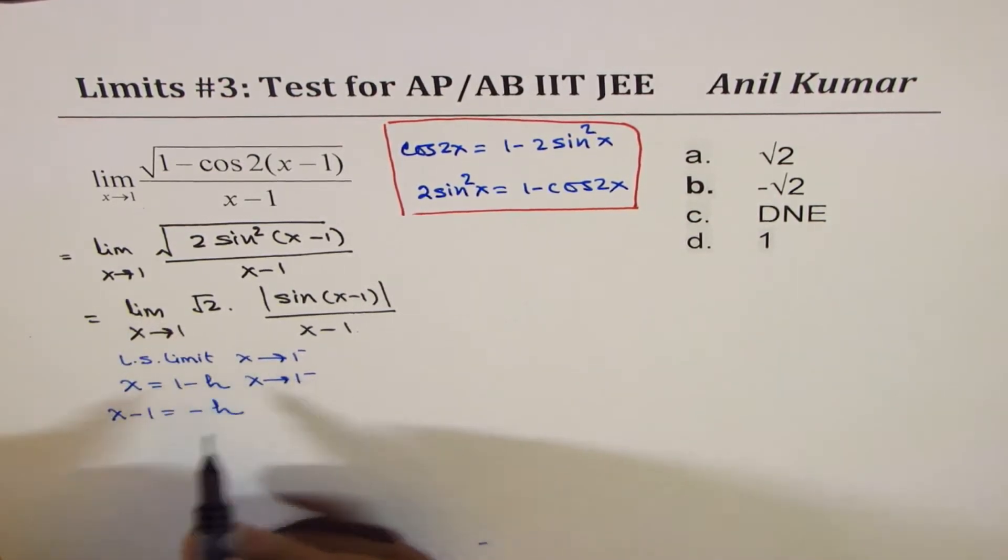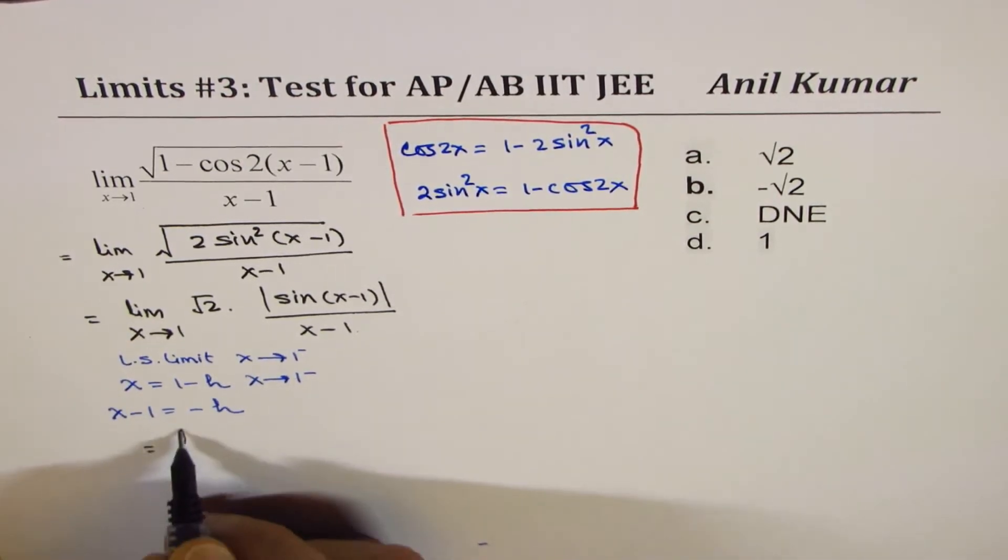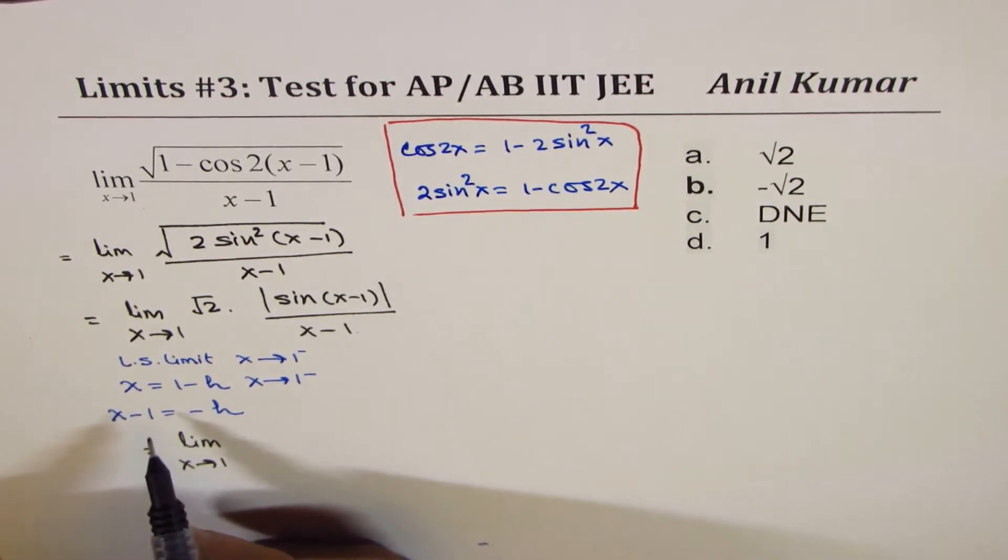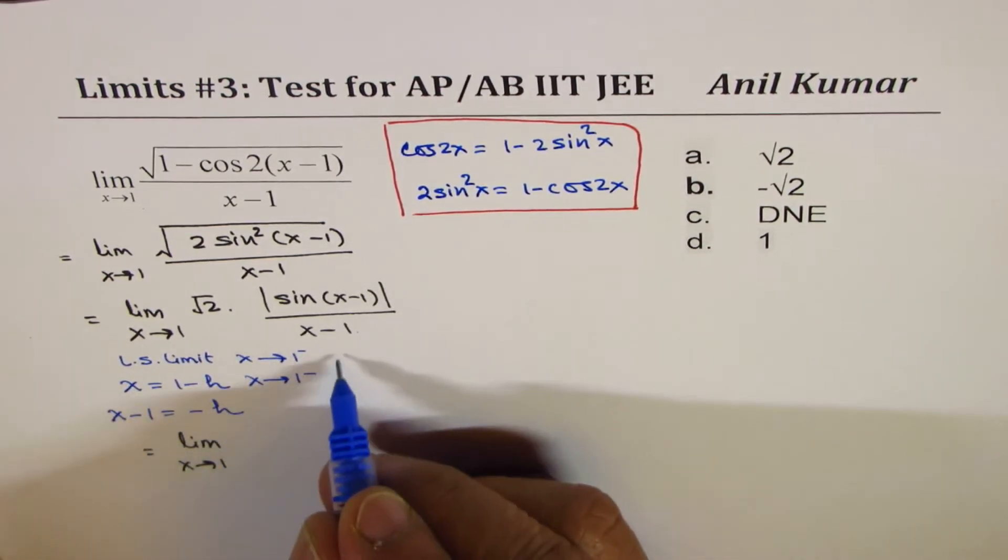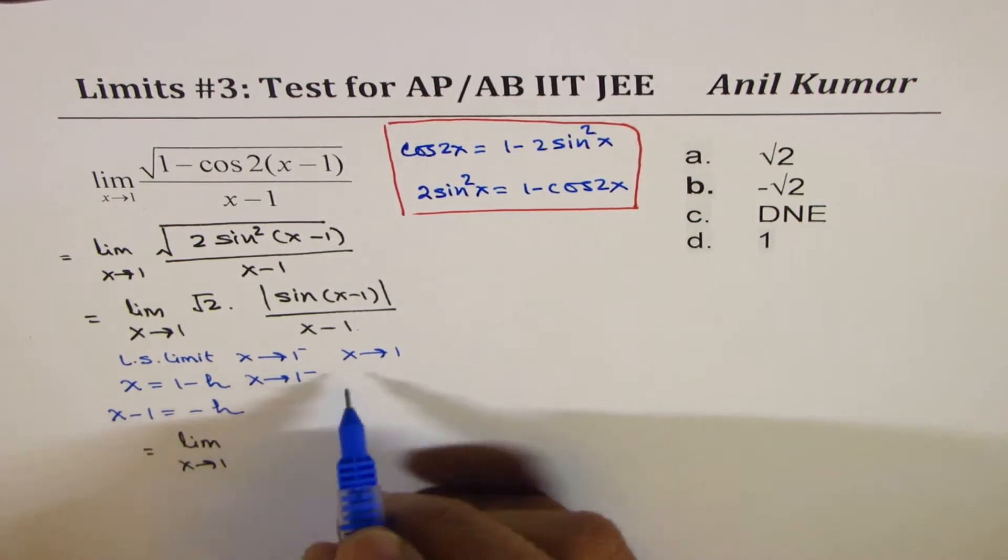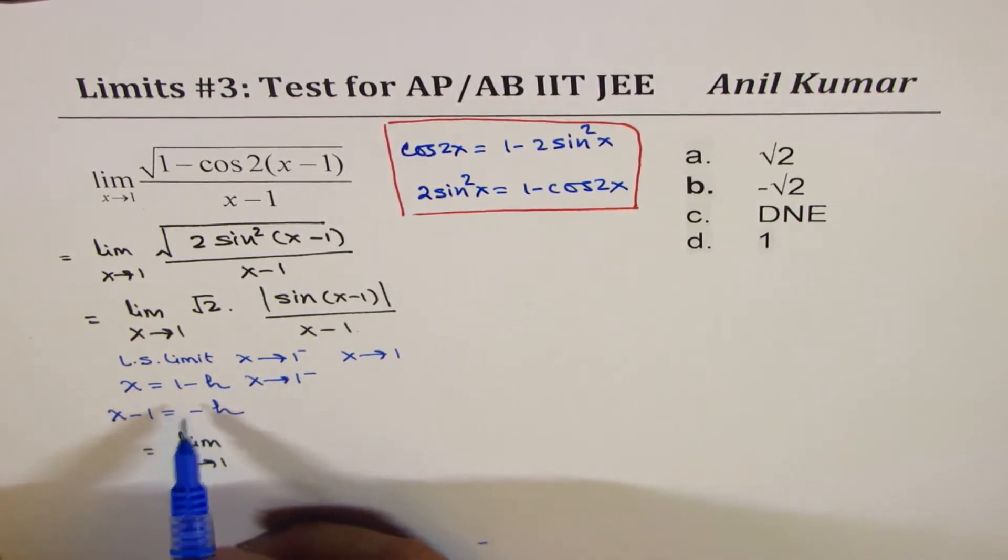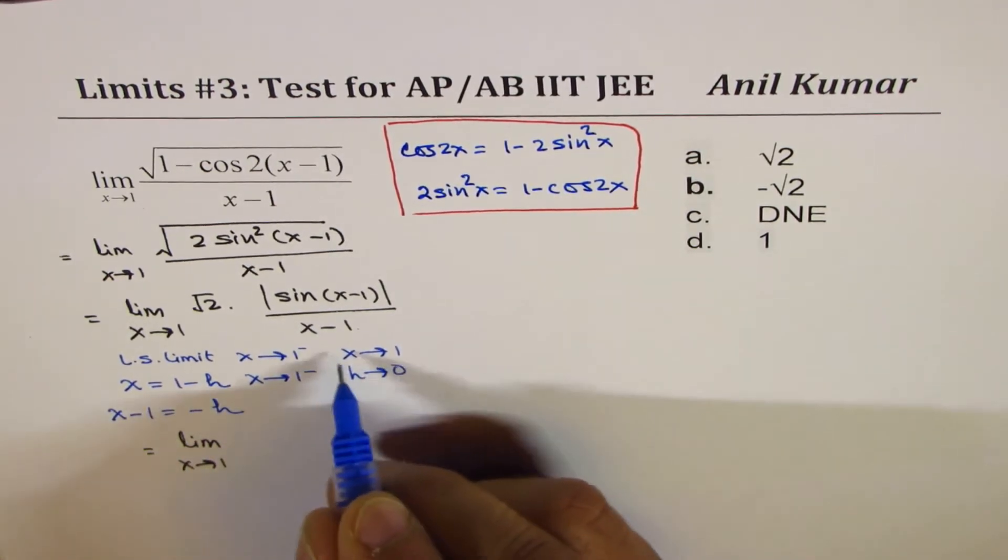So let's replace. So we get the left side limit. We could write this as limit x approaches 1 from the left side. One more thing I forgot here. Since we are replacing with h, we'll also see what happens to the limit of h. If x approaches 1, then h approaches 0.